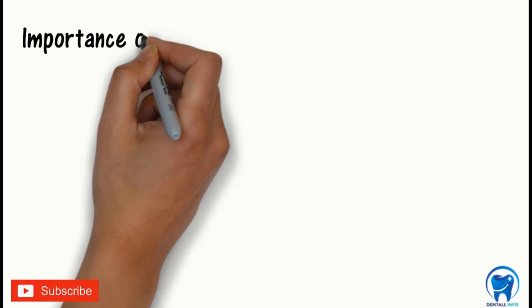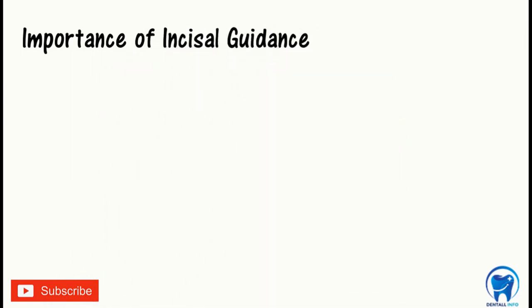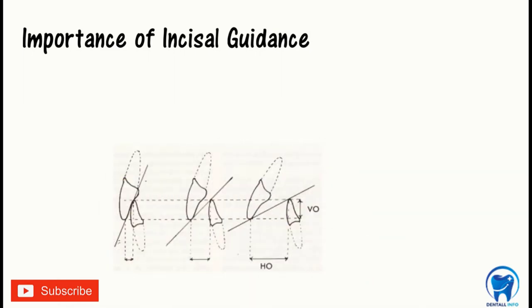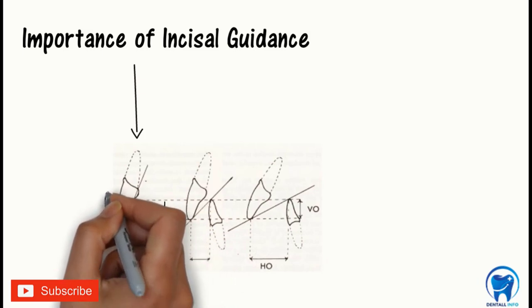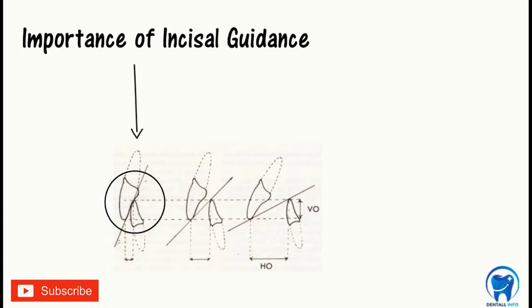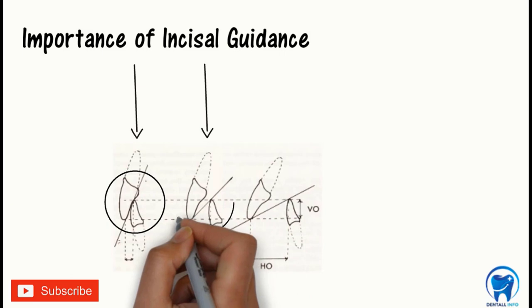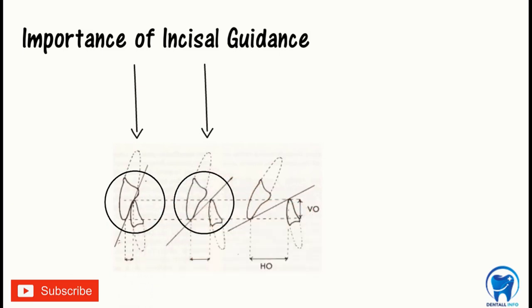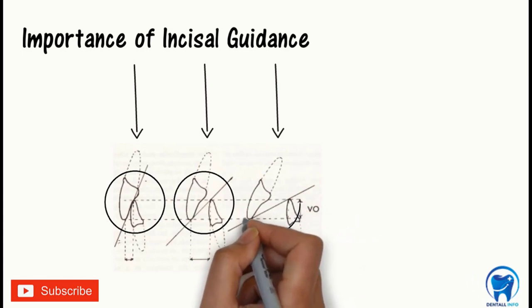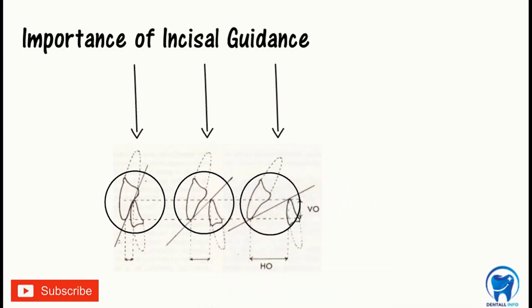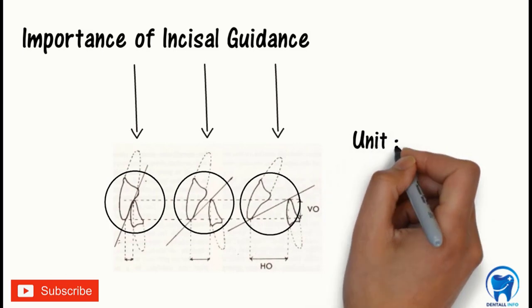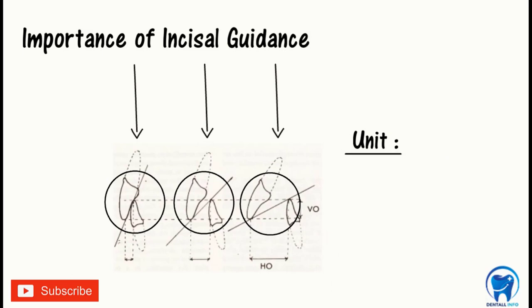Now let's understand the importance of incisal guidance. The first part indicates how the overjet and overbite form the incisal guide angle. In the second part of the diagram, we can see how an increase in the overjet has led to an increase in the incisal guide angle. And the third part shows a further increase in the overjet which has caused a further rise in the incisal guide angle. The unit used to express incisal guidance is degrees and is decided by the dentist when he arranges teeth. It is selected in such a way that a balance is produced in the occlusion.